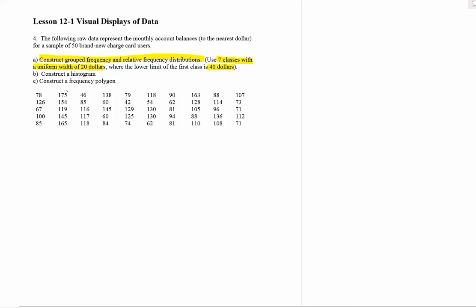If I look at the data, the largest number is 175 and the smallest looks to be 46, actually I see 42. So they are having us begin a little bit smaller than the lower number 42. They want us to begin our first class at forty dollars. They also want us to use seven classes.